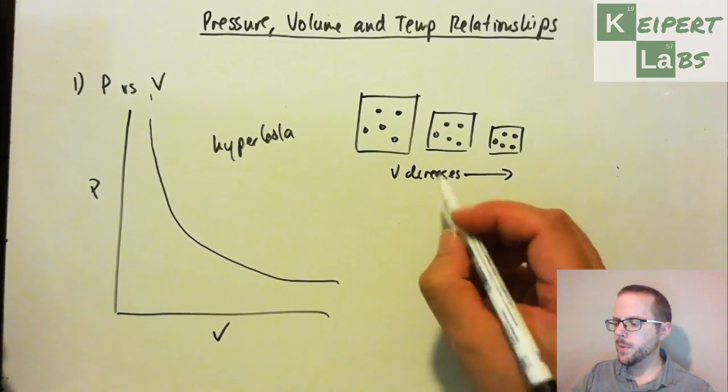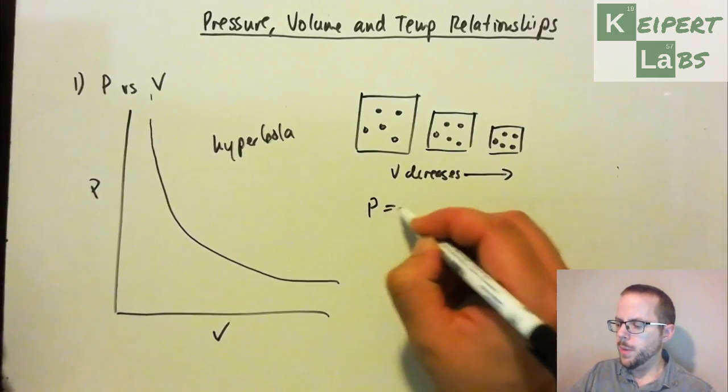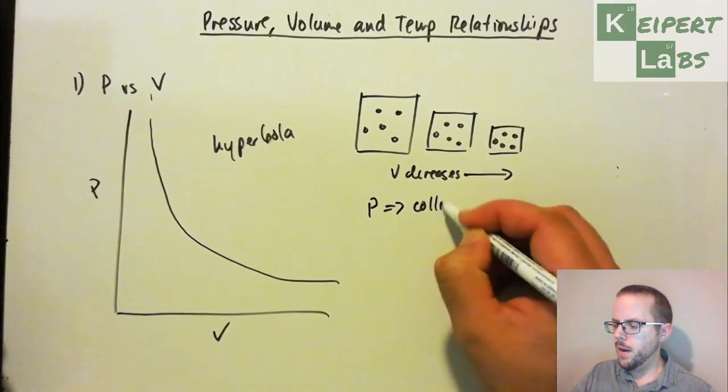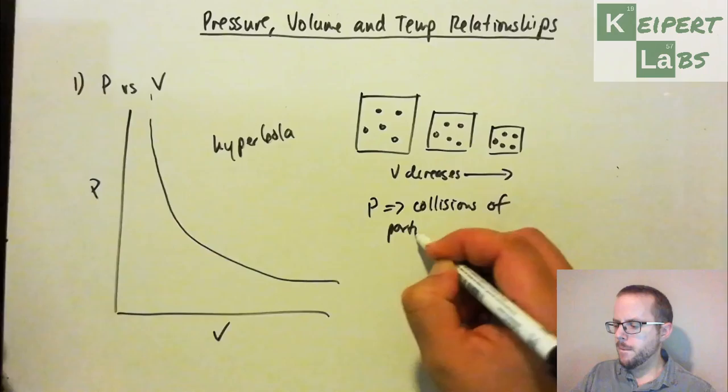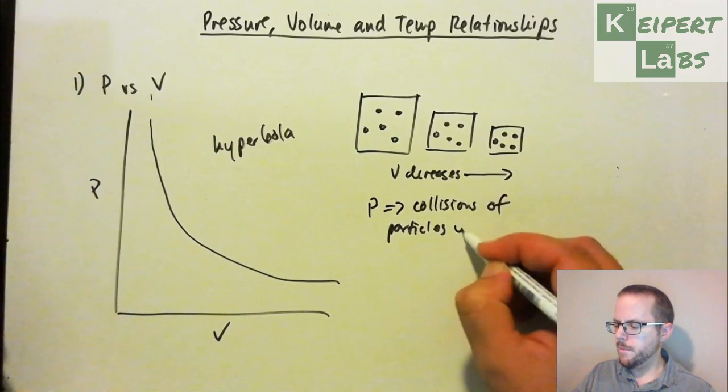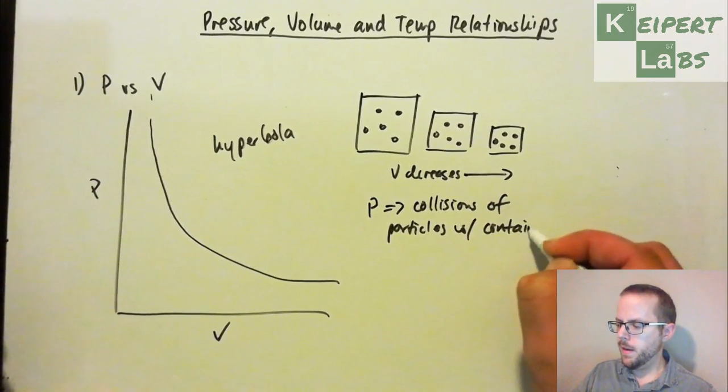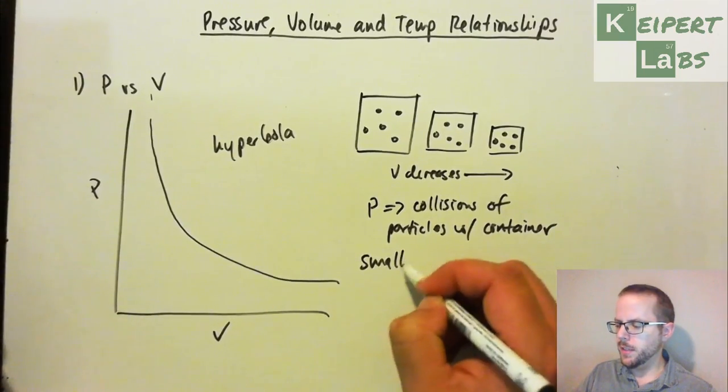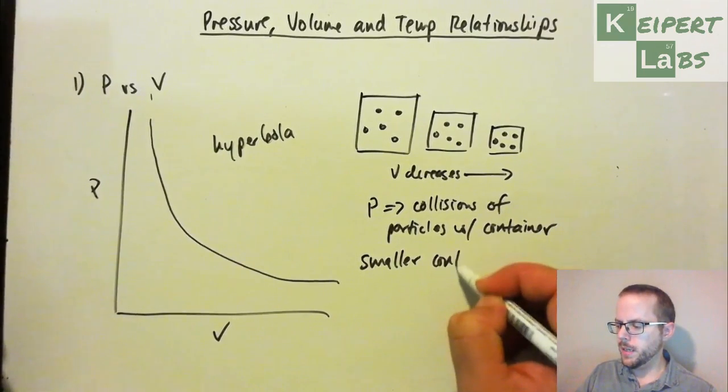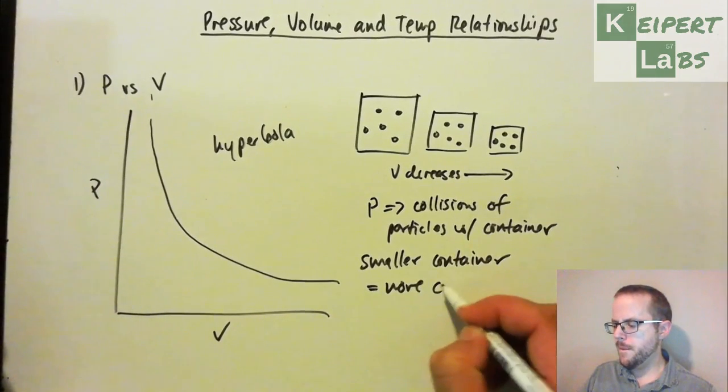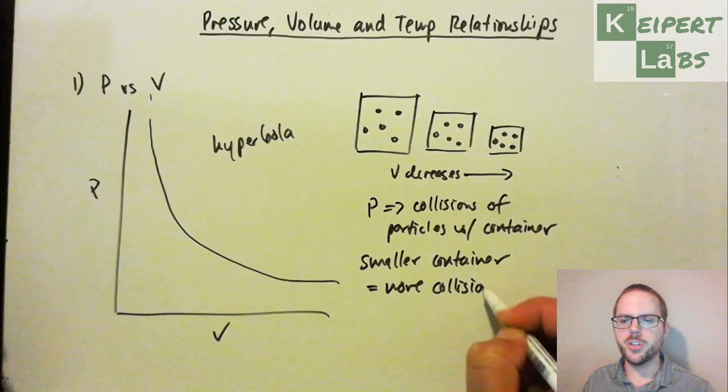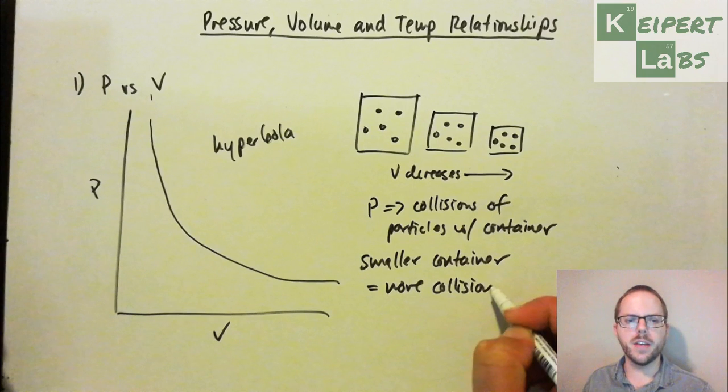And so what we're seeing here is that remember when we're talking about pressure, we're thinking about collisions of particles with the container. So think about this logically then, that if we have a smaller container, we get more collisions. There's more opportunities for those particles to be hitting the sides of the box as the box itself gets smaller.